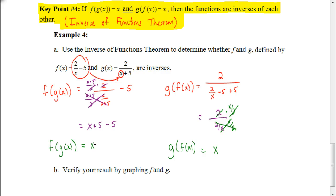The fact that both g∘f(x) and f∘g(x) equal x tells us these two functions are inverses of each other. We can verify that by graphing the two original functions and seeing that they're reflections over the line y equals x. This ends this particular lesson — a lot of this is review from advanced algebra, so you should already know these key points. Make sure you're familiar with all of them because you're going to need them for the assignment. Good luck.